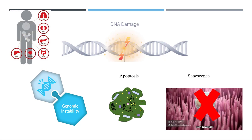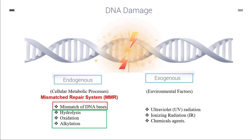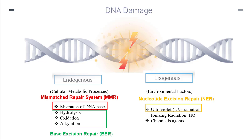So that's why we have repair systems present inside our body to avoid all these things. For mismatch of DNA bases, the system we have is called the mismatch repair system, or MMR. For hydrolysis, oxidation, and alkylation, the repair system is called base excision repair, or BER. For ultraviolet radiations, the mechanism is called nucleotide excision repair, or NER.